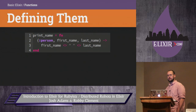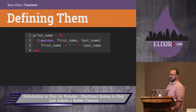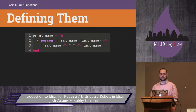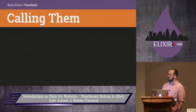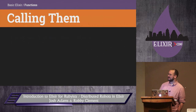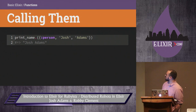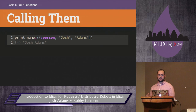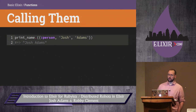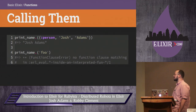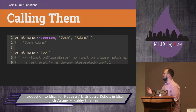The print_name function will match a tuple containing three elements when the first element is the atom :person, and then it matches to a body that concatenates the second and third elements together — the first and last names. The syntax to call an anonymous function in Elixir is a little weird — you have to call it with a dot, so it feels different from calling functions in modules. If you call it with an argument that doesn't match any of the parameter lists, you get a function clause error — basically, there's no function defined that handles the input.